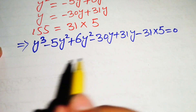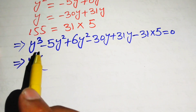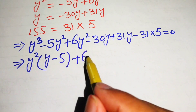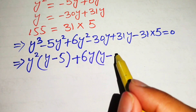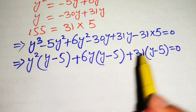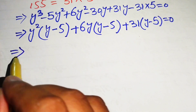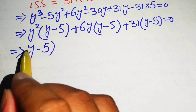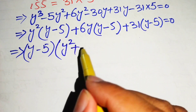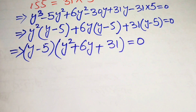Simplifying, we take y squared common from the first two terms to get y squared(y − 5), then 6y common to get 6y(y − 5), and 31 common to get 31(y − 5). Each term contains the factor (y − 5), so we factor it out: (y − 5)(y squared + 6y + 31) = 0.